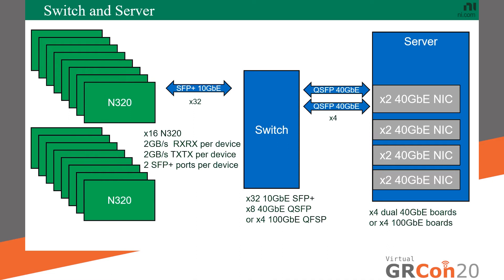This switch-and-server approach is an intuitive way to aggregate data into a single server, but it has challenges. The first is cost: a switch handling 32 ten-gigabit and eight 40-gigabit connections starts at $10,000 and goes up to $20,000–$25,000. That means the switch alone costs nearly as much as the server itself — already a significant strike against this topology.